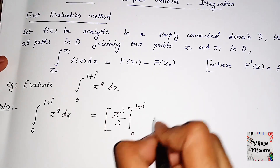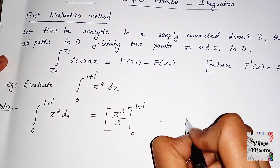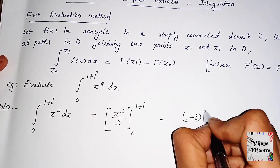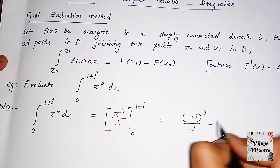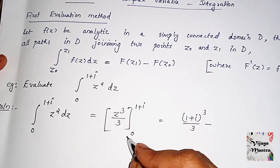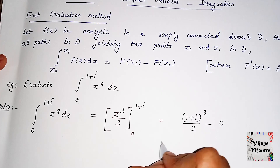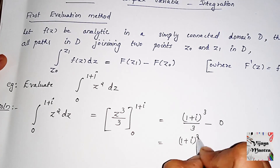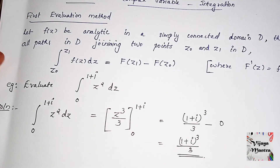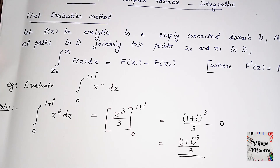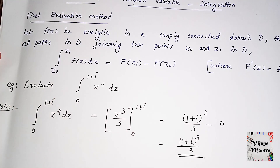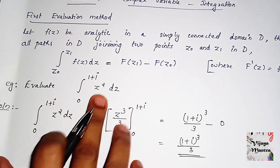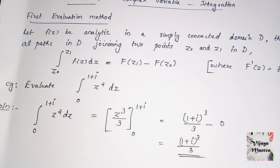Substituting the upper and lower limits: the upper limit (1+i) cubed divided by 3, minus 0. That equals (1+i)³ / 3. This is why we use the first evaluation method — just integrate and substitute the upper limit value.